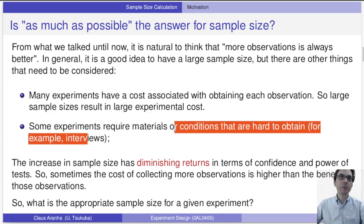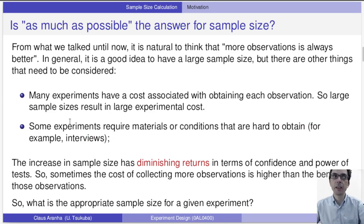Sometimes the experiments require materials or conditions that are hard to obtain. For instance, you want to make interviews with people that went to Antarctica. There are not that many people that went to Antarctica, so it's limited the number of repetitions that you can do.